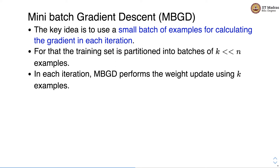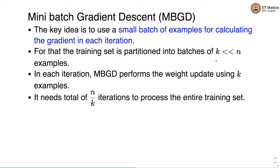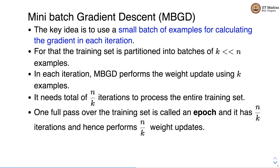For each iteration, MBGD performs a weight update using these k examples. It therefore needs a total of n/k iterations to process the entire training set. One full pass over the training set is called an epoch. An epoch has n/k iterations and hence performs n/k weight updates, which is much faster than standard gradient descent, which performs a single weight update by processing the entire training set.